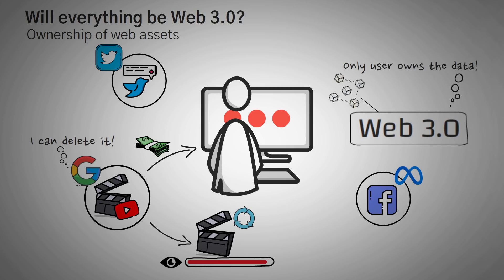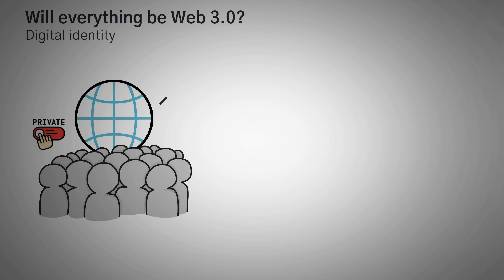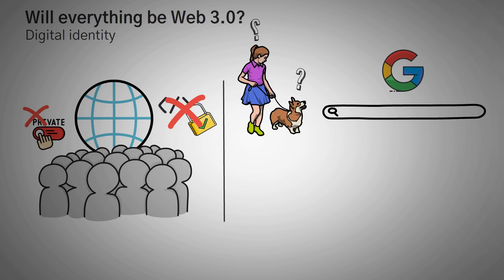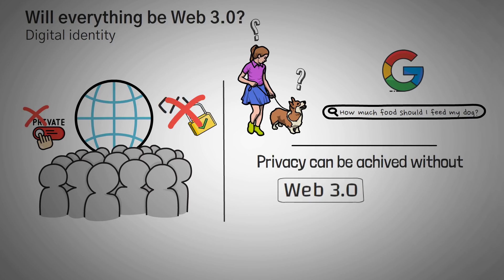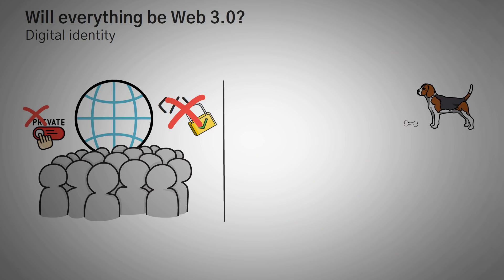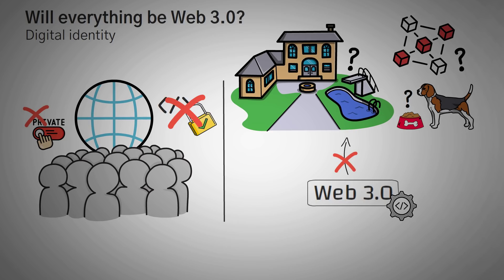Another problem that Web3.0 solves is related to digital identity. However, there is a very large part of the web where the ideas of privacy and asset ownership will not be wanted or needed — like simply using Google to search how much to feed your dog. You can actually reach a decent amount of web privacy without Web3.0 tools simply by using a web browser like Brave or Chrome with a few extensions, or even Tor. Most web traffic includes people searching for basic educational information, and the tools that Web3.0 offers don't really add extra value to that experience.